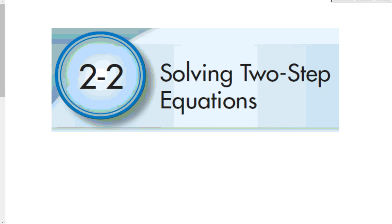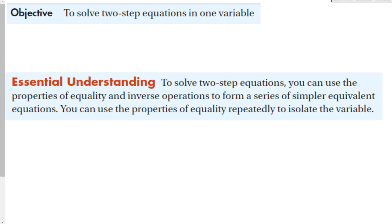2-2: Solving two-step equations. Our objective for this lesson is to solve two-step equations in one variable. Our essential understanding is that to solve two-step equations, you can use the properties of equality and inverse operations, just like we did with one-step equations, to form a series of simpler equivalent expressions. You can then use the properties of equality repeatedly to isolate the variable.